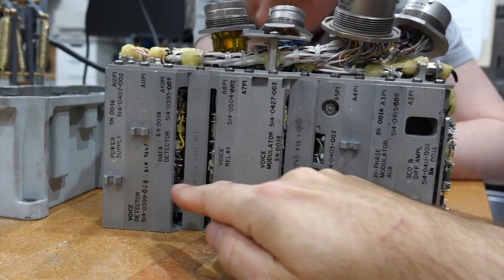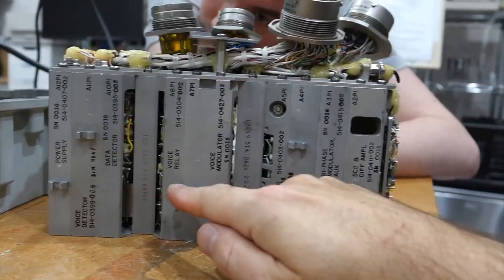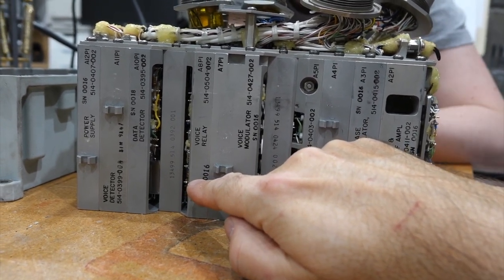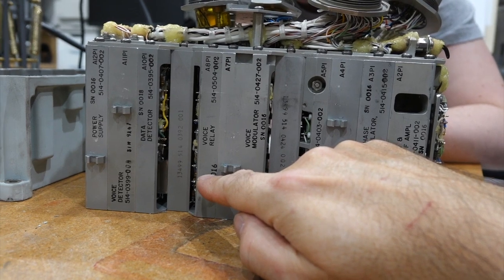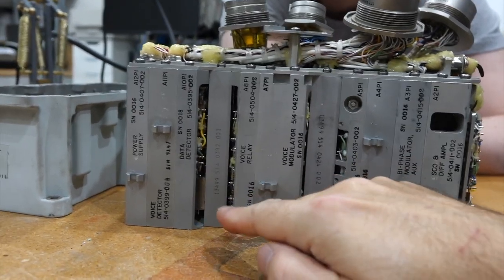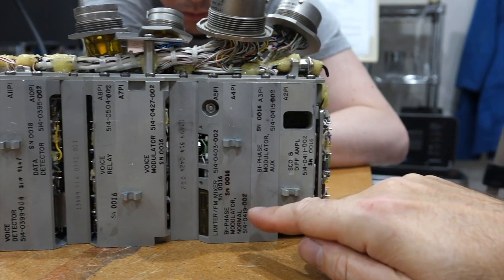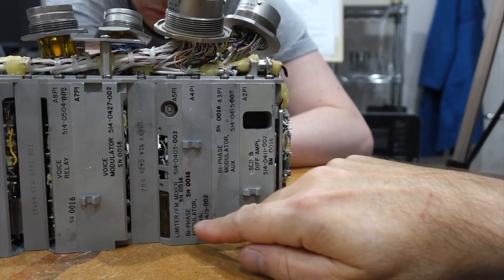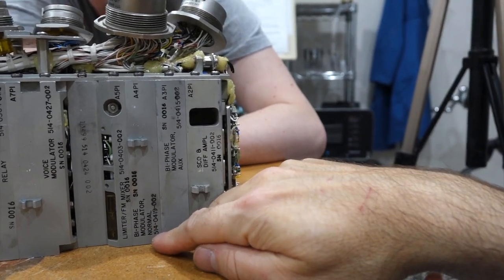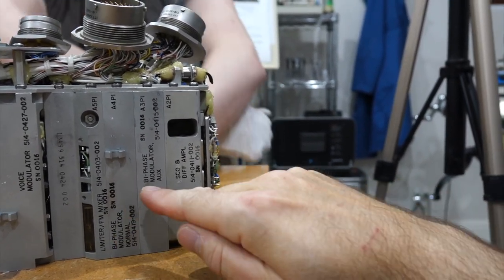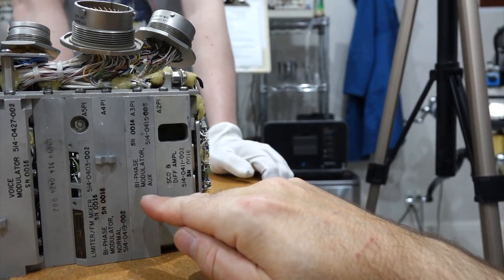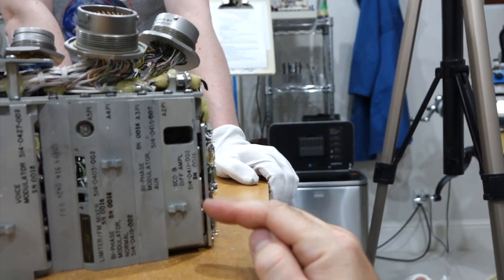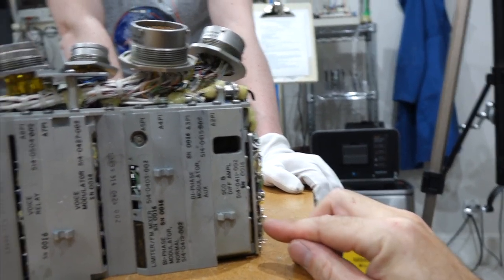So receive, data and voice, voice relay. That's to switch from CSM voice to relayed LEM voice via the CSM. That is send. Limiter FM mixer, that's FM modulation, obviously. BPSK, this is data modulation, principal data modulation alternate. SCO, I'm not sure what that is. This is actually the scientific data modulation section.